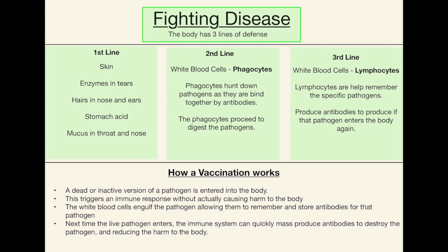The second line of defense is known as phagocytes — one of your white blood cells. The phagocytes hunt down pathogens as they are bound together by antibodies. Effectively, the antibodies stick to multiple pathogens, so instead of a phagocyte having to chase say 10 different pathogens, the antibodies clump them all together into one big clump and the phagocyte can get all 10 at once. These phagocytes then proceed to digest the pathogens and get rid of them.